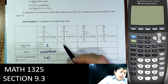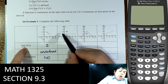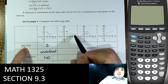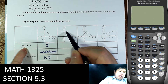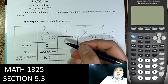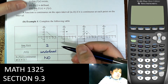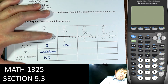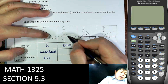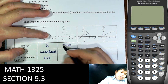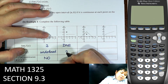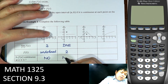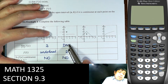On to the next one. What is the limit of the function when x goes to 1? From the left-hand side it approaches this point; from the right-hand side it approaches this point. They do not agree, so the limit does not exist — we write DNE. The value of the function when x = 1 is actually defined at 2. And is the function continuous? The answer is also no, because the limit does not exist.